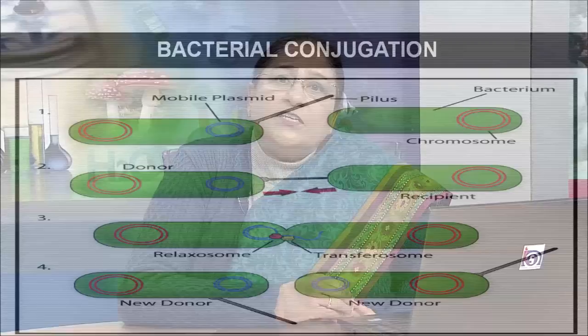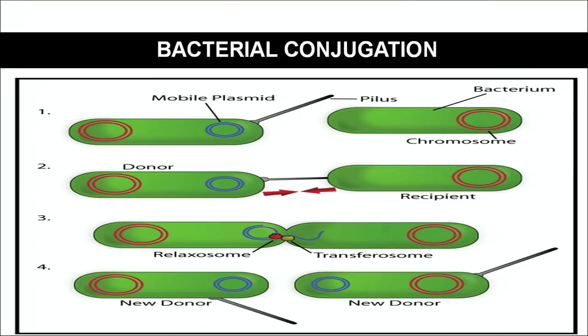The third method is transduction, which can be explained through the Hershey and Chase experiment. When the bacteriophage infects the bacteria, viruses use the host machinery to make their own copies. The virus gets integrated into the main genome of the bacteria. While making its own copies, some part of the bacterial genome gets attached to the virus genome. When this virus breaks the bacterial cell and infects another bacterium, that results in transduction — the genome from the first bacterium gets transferred to the next bacteria.